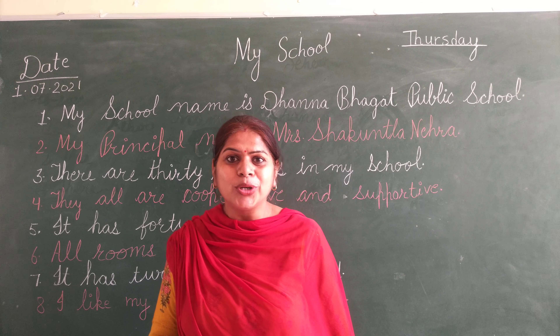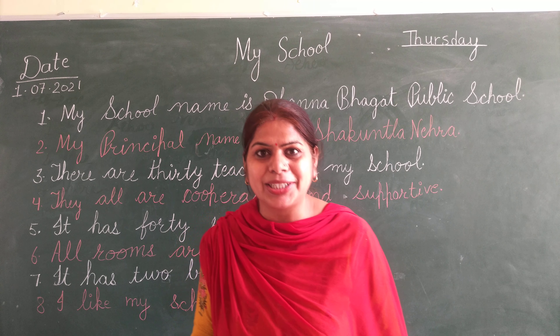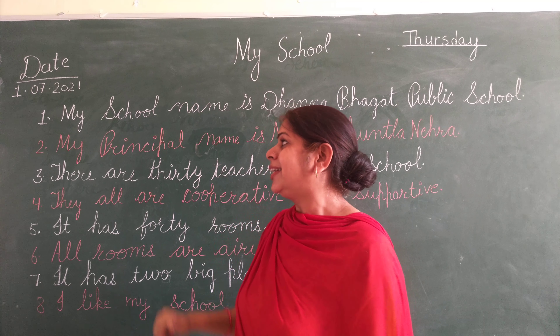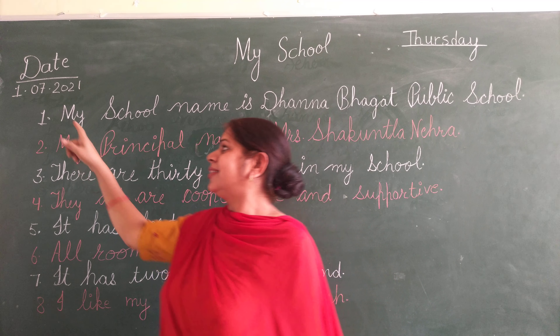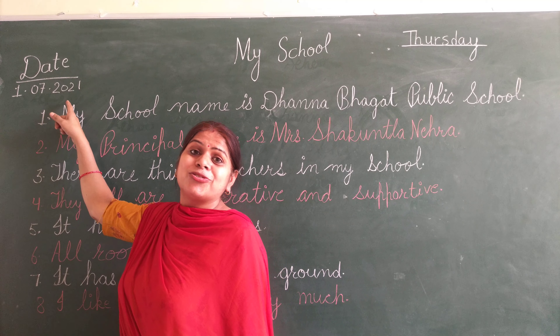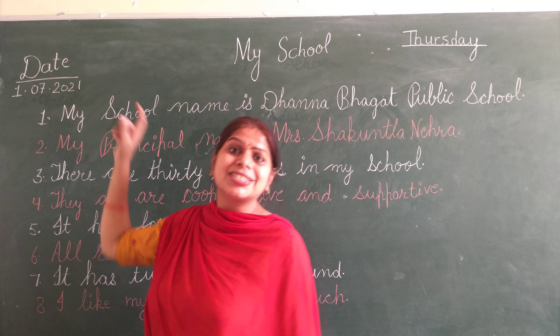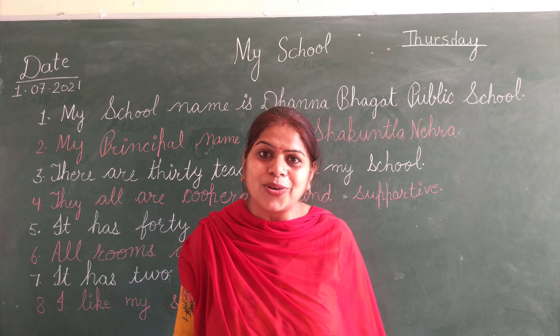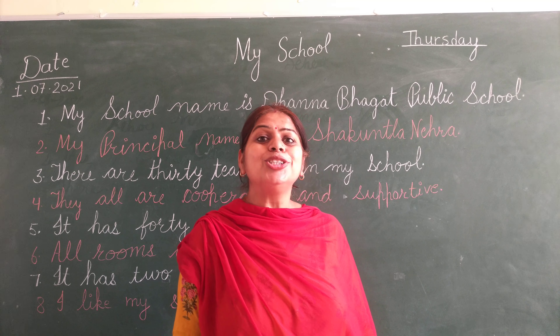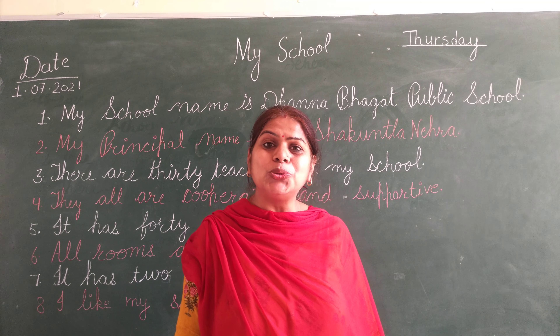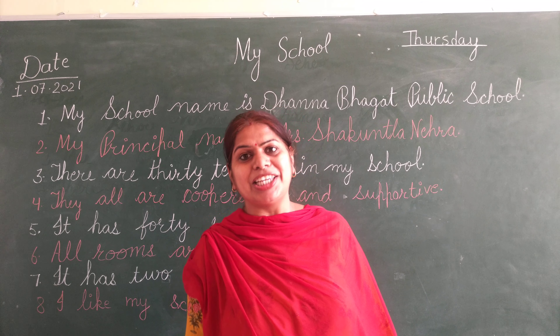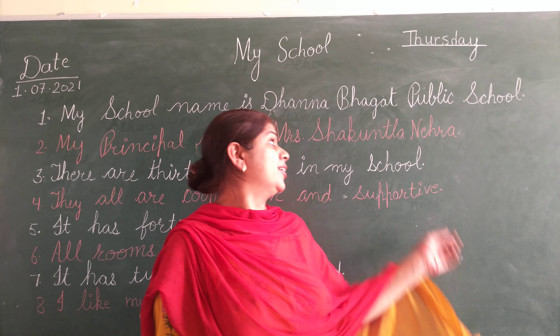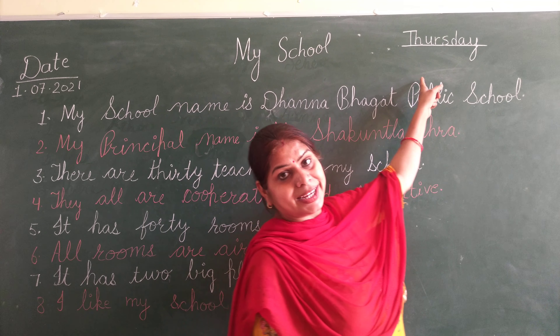Do you know which date is today? It's 1st July. Which month is going on? June. And which day is today? Thursday.